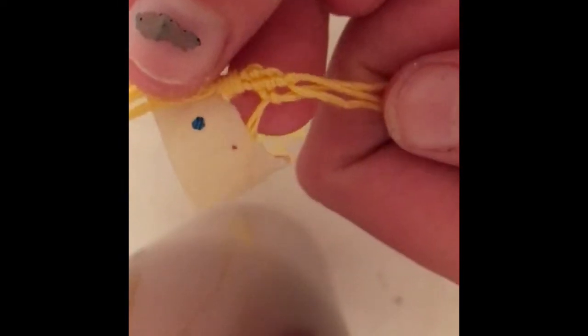All right so here you can kind of see how it's starting to form a stripe and as you continue that it'll make a stripe all the way down so your bracelet will start to look something like this.